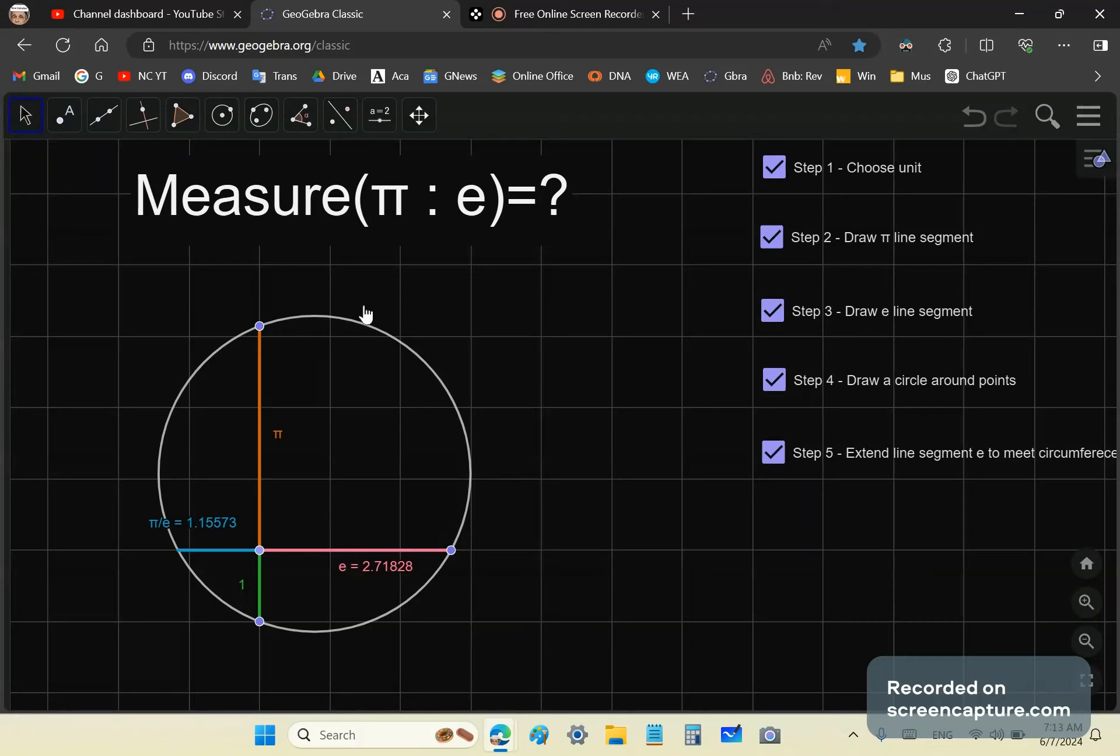We'll usually just have an approximation, which is what you see here, 1.15573. Algebra uses the abstract unit and or equal parts of the abstract unit.